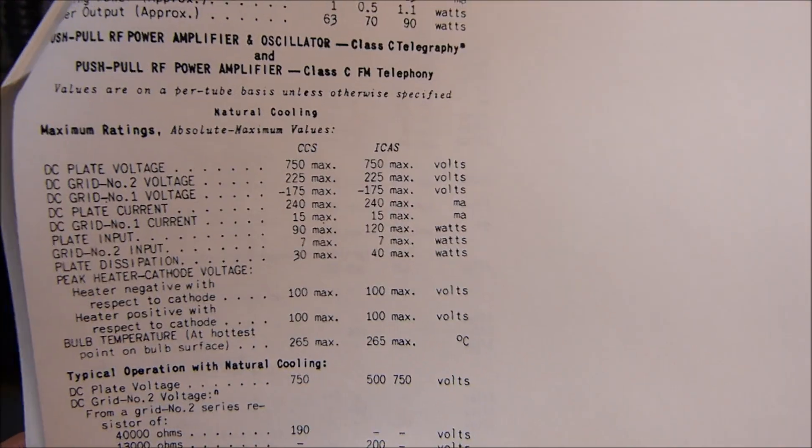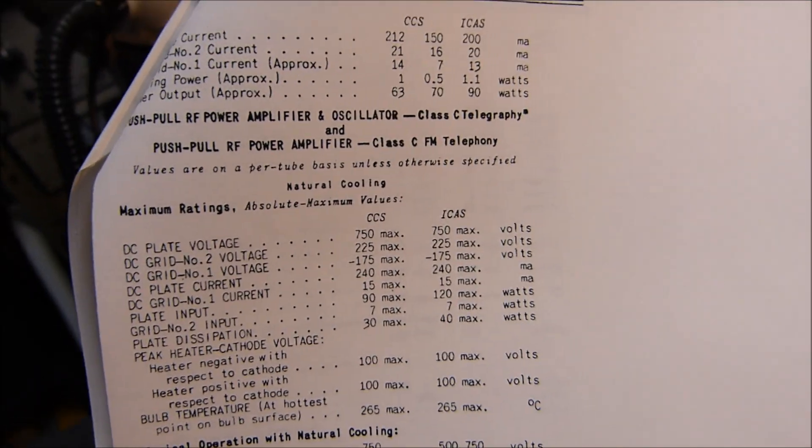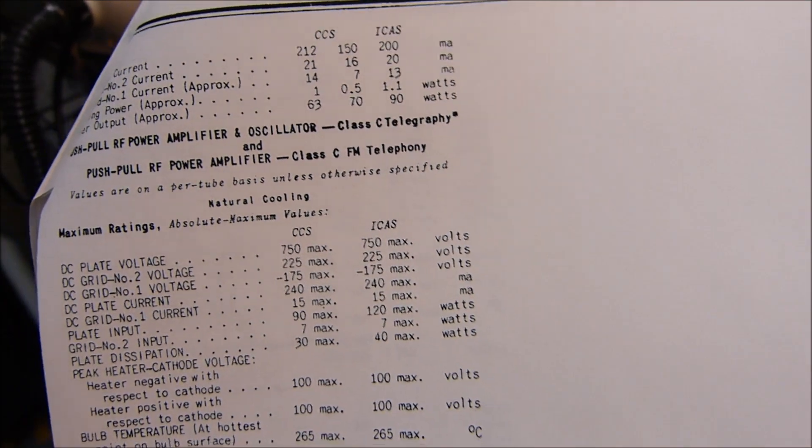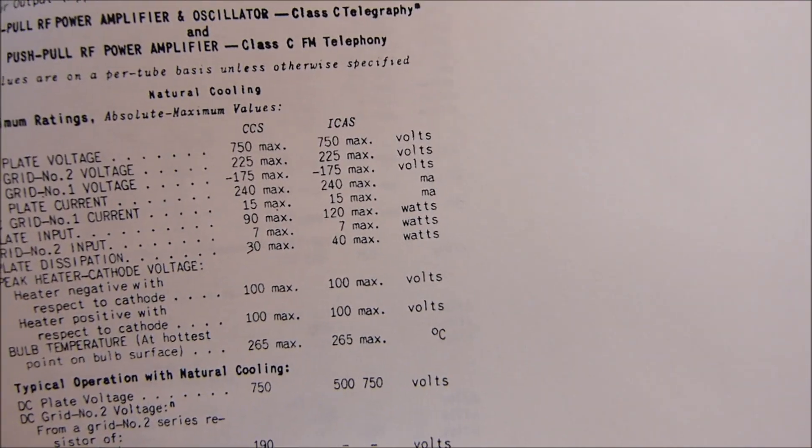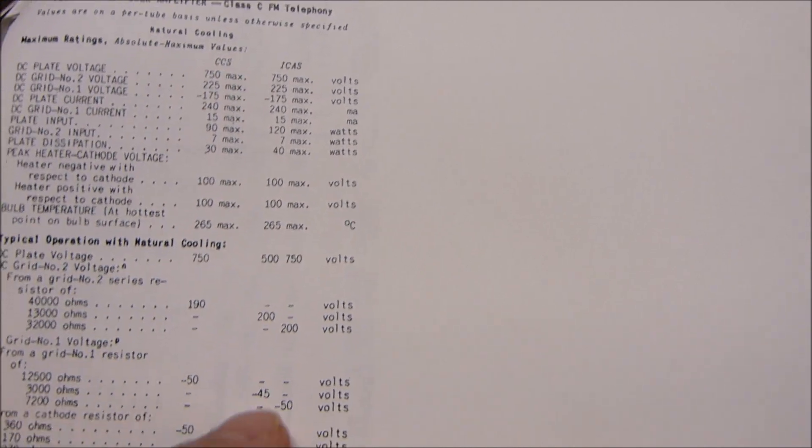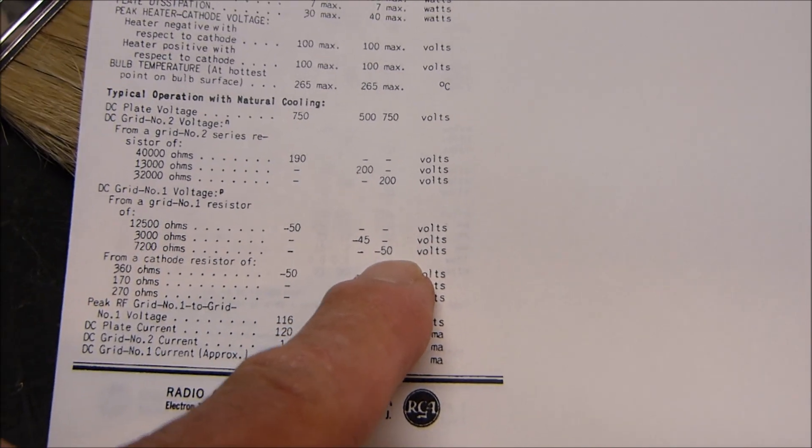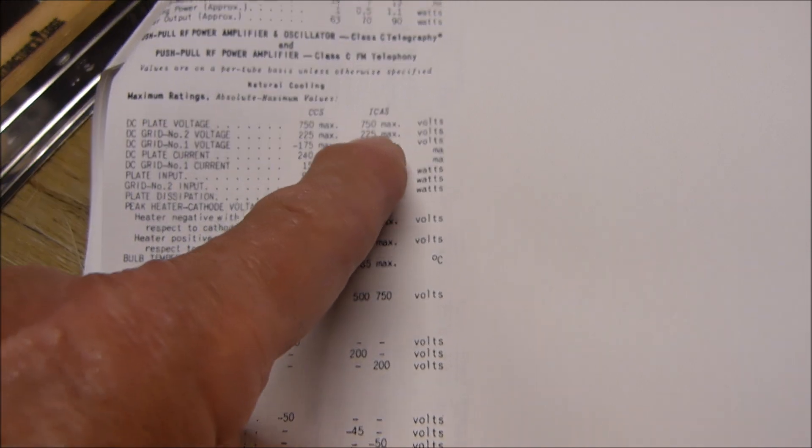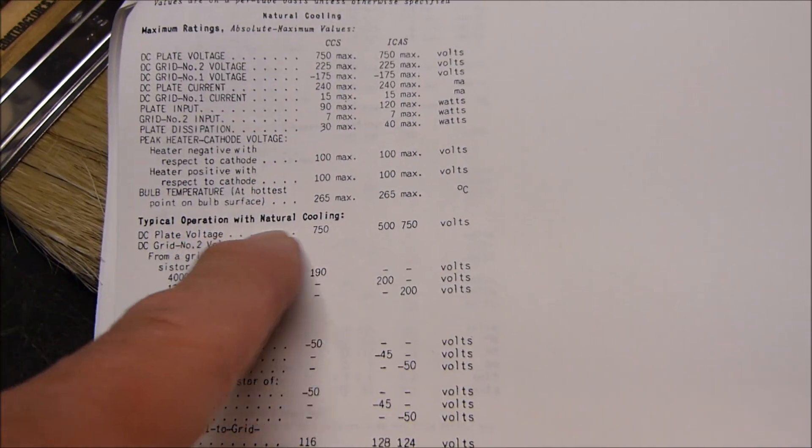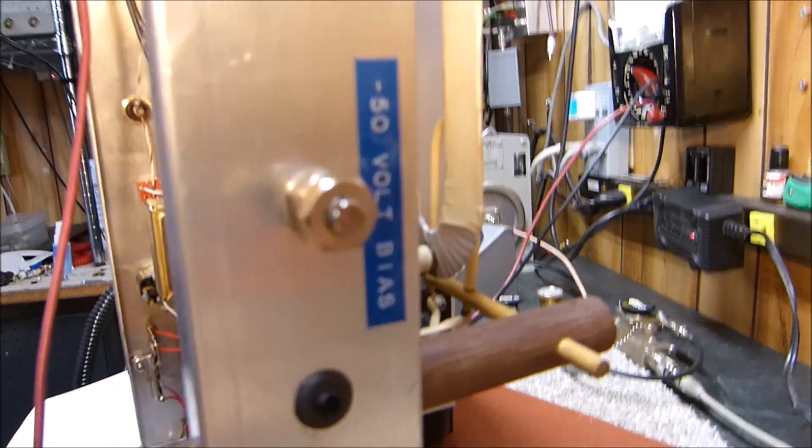Here's the data sheets on the 829B. What we're running it at is push-pull amplifier class C FM telephony, 750 volts on the plate. We want minus 50 volts on the grid and 225 on the screen. Typical operation there - you want 750. The bias - I actually put an adjustment back here, I even put minus 50 volts bias written on it.